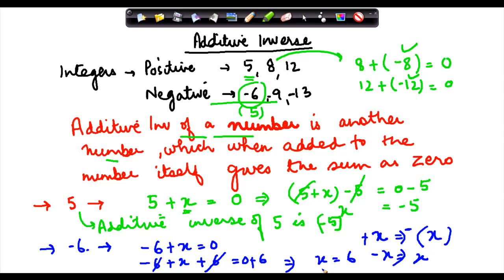So this was the concept of Additive Inverse, which means a number which when added to another number gives the sum as zero.